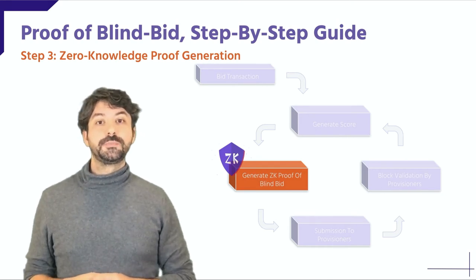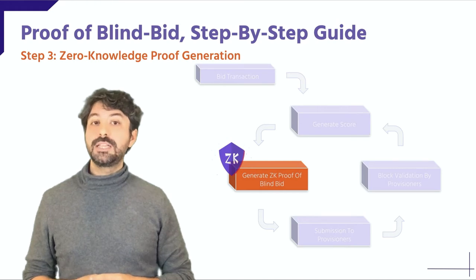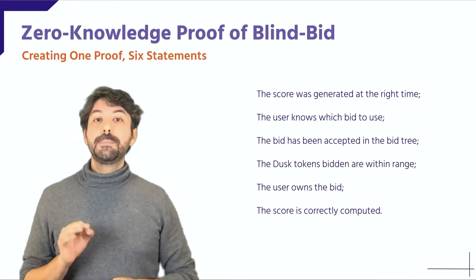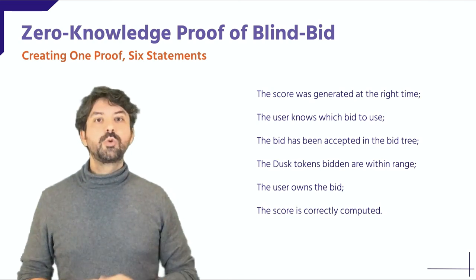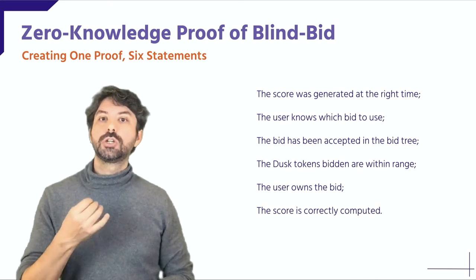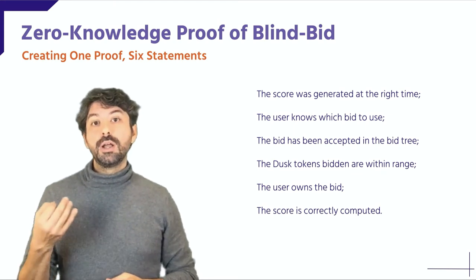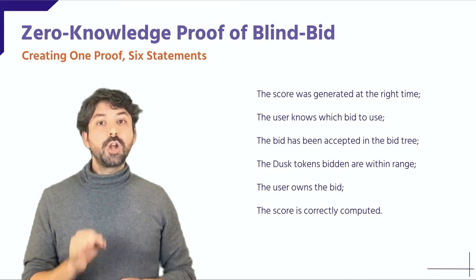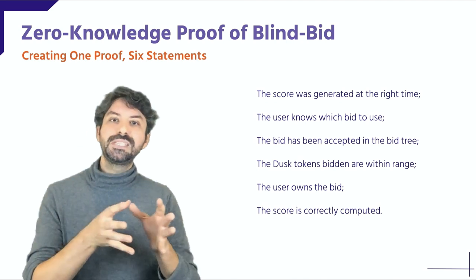Step 3: Zero-knowledge proof generation. The participant creates a zero-knowledge proof of Blind Bid using an algebraic circuit that requires a complex zero-knowledge proof of several statements that all need to be proven true simultaneously. The bidder must prove that the lottery score has been generated for the current consensus step, round, and seed. The bidder must prove knowledge of the hash of the bid transaction — in order to prove any content of the bid, the bidder must first prove knowledge of the bid itself. The bidder must then prove knowledge of the path of the bid to the root of the Poseidon tree — a Merkle tree hashed with the Poseidon hashing algorithm — which functions as bid contract storage. Proof of knowledge of the path, without leaking the path, preserves the anonymity of the bid and proves inclusion into the tree, meaning the bid has been submitted and is currently valid.